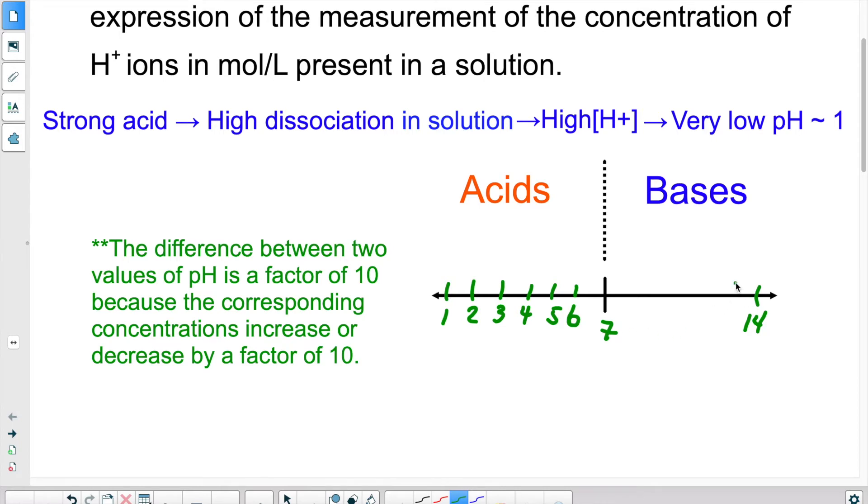Or a pH of 4 is 10 times more acidic than a solution with a pH of 5. And we can say the same thing about this side of the scale. So something with a pH of 13 is 10 times less basic than a solution with a pH of 14. So again, it's always a factor of 10 between the different graduations on this scale.